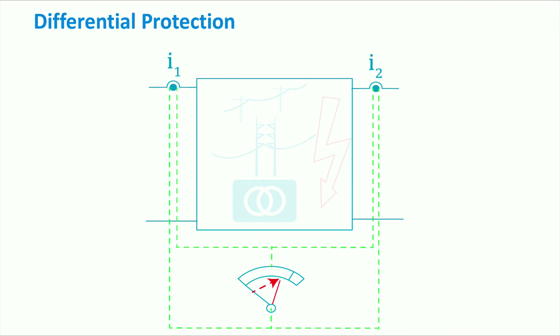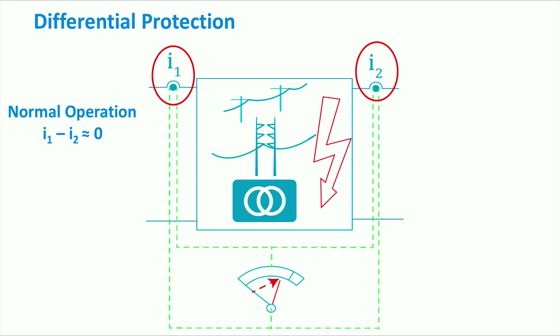The equipment could be a transformer, a distribution or transmission line, etc. This method consists of comparing the input and output current of the equipment. During normal operation, the difference between the two values is very low, which is due to the internal power losses in the equipment.